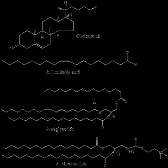Glycerolipids are composed of mono-, di-, and tri-substituted glycerols, the best known being the fatty acid triesters of glycerol, called triglycerides. In these compounds, the three hydroxyl groups of glycerol are each esterified, typically by different fatty acids. Because they function as an energy store, these lipids comprise the bulk of storage fat in animal tissues. The hydrolysis of the ester bonds of triglycerides and the release of glycerol and fatty acids from adipose tissue are the initial steps in metabolizing fat. Additional subclasses include glycosylglycerols, characterized by the presence of one or more sugar residues attached to glycerol via a glycosidic linkage.